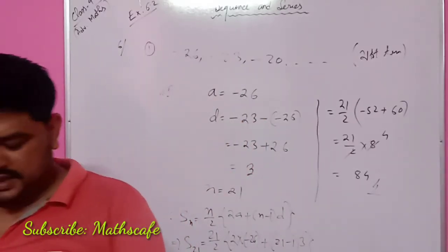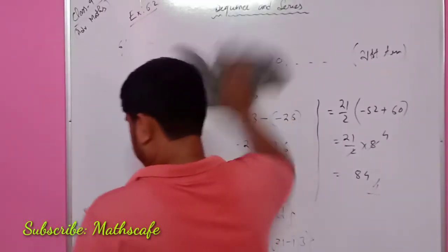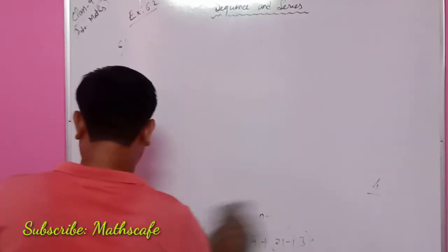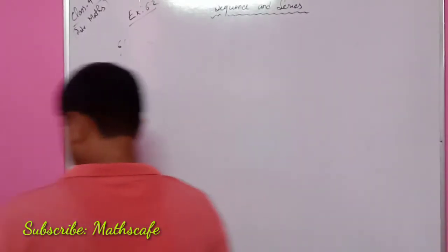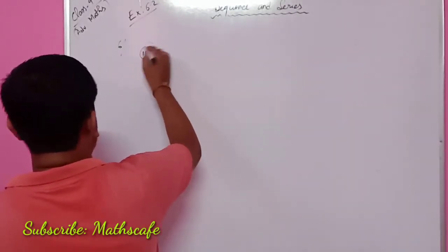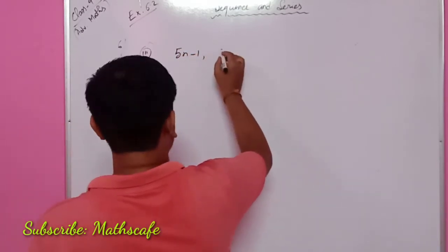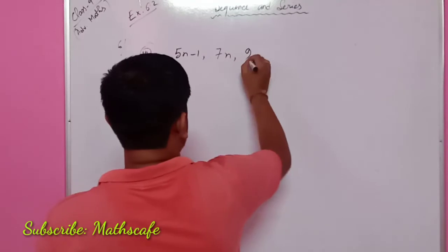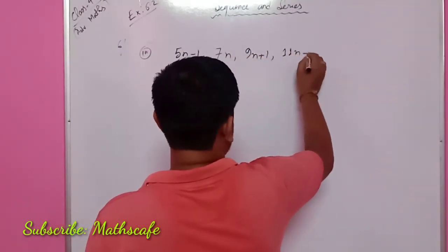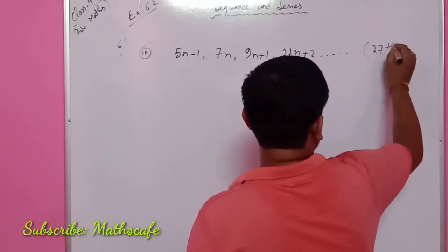I will write the quality number 3. The terms are: 5n minus 1, 7n, 9n plus 1, 11n plus 2. Number three: there is 5n minus 1, 7n, 9n plus 1, 11n plus 2, up to the 27th term.